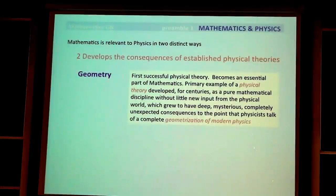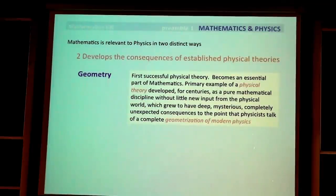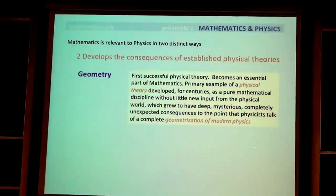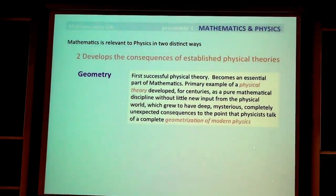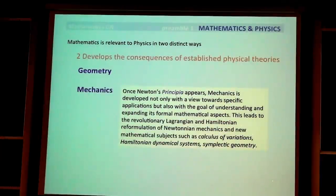It is the primary example, in my opinion, of a physical theory developed for centuries as a pure mathematical discipline, without much new input from the physical world, which grew to have deep, mysterious, and completely unexpected consequences — in the sense of Wigner — to the point that physicists today talk of a complete geometrization of physics. This is clearly an example of fundamental importance.